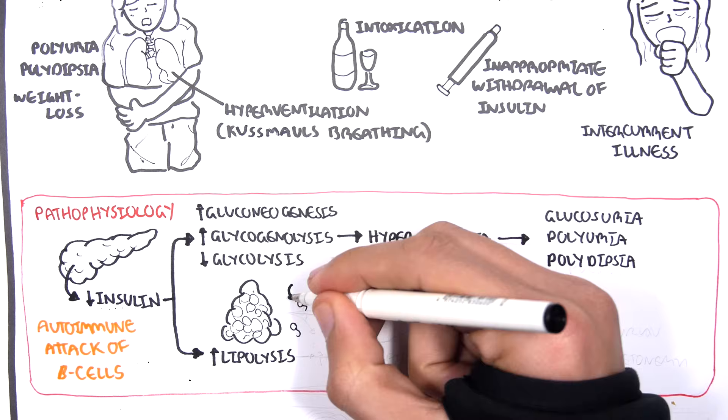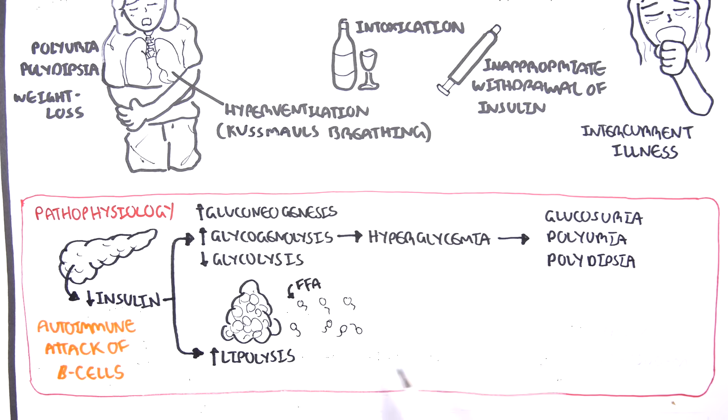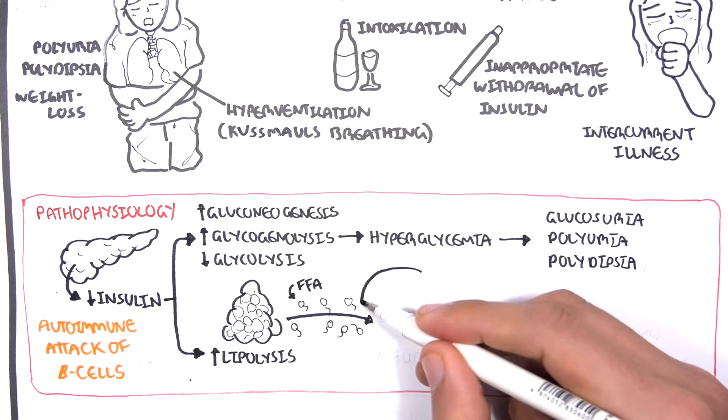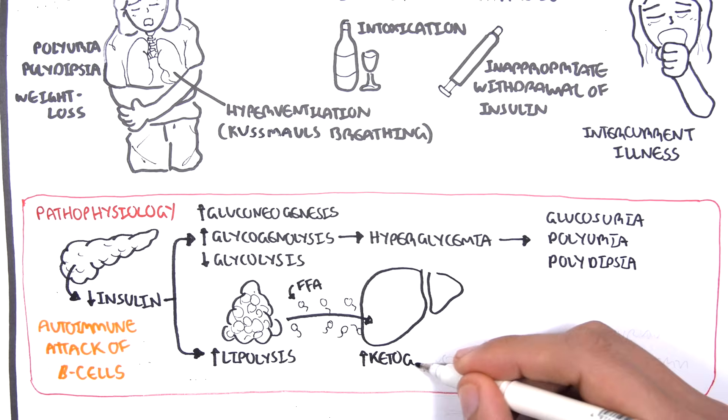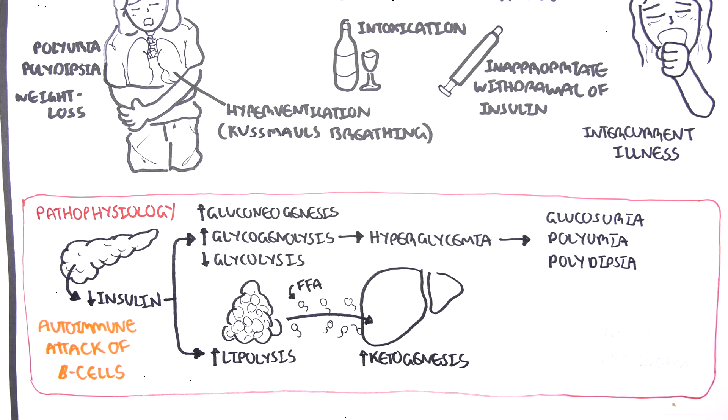Fats get broken down from adipose tissue to form free fatty acids which then go to the liver and undergo ketogenesis to make more ketone bodies. It does this because the body needs some form of energy, some form of supply because glucose is not working or because glucose is not present.